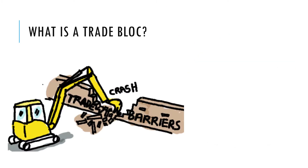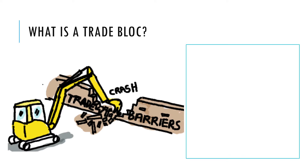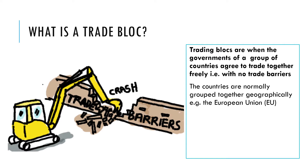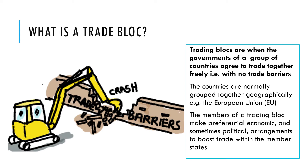A trade bloc exists when governments make agreements between themselves to do with trade. Normally this is to make trade more free — to remove trade barriers and encourage trade between the member states. Often these countries are close together geographically because trade is easy to do with a neighbouring partner. Sometimes a trading bloc can have agreements that aren't just on trade; they can also sometimes evolve into political arrangements as well.